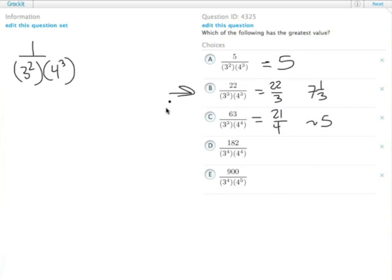So far the leader seems to be answer choice B. Choice D, even though it's got 182 in the numerator, we have an extra 3 and an extra 4 in the denominator, so it ends up getting reduced to 91 eighteenths, which is again around 5.